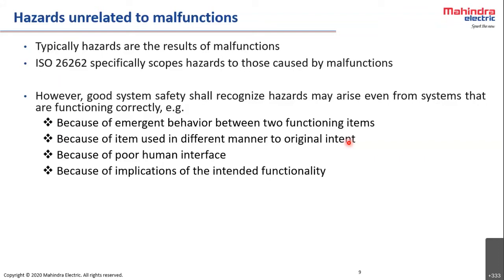Another example is hazards because of poor human interface. In one of our 48-volt EV programs, we changed the gear lever to a gear knob. The gear knob was placed in the instrument cluster alongside AC knobs, audio adjustment, and other knobs. We realized that during driving, the user may unintentionally adjust the gear knob while trying to adjust the audio. This could cause a switch from forward to reverse drive, or even unintended braking — all without any EE failure.